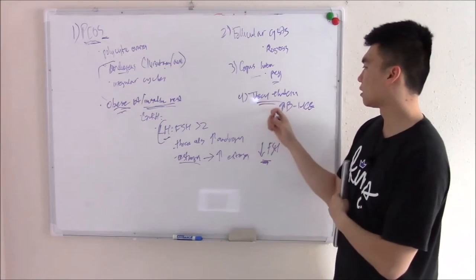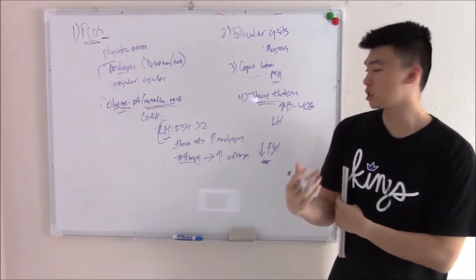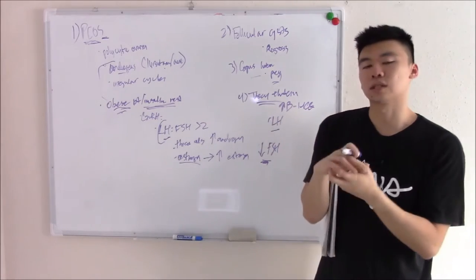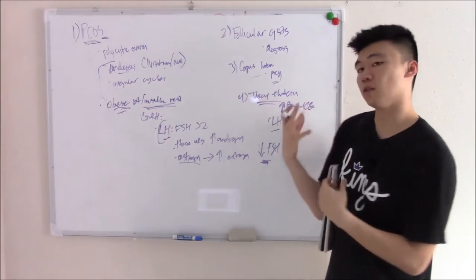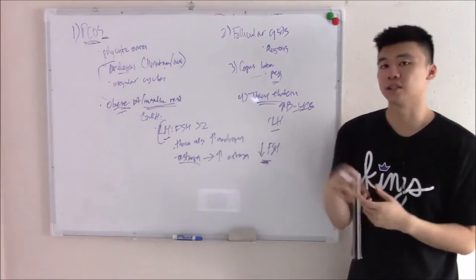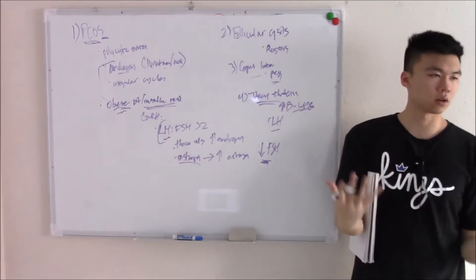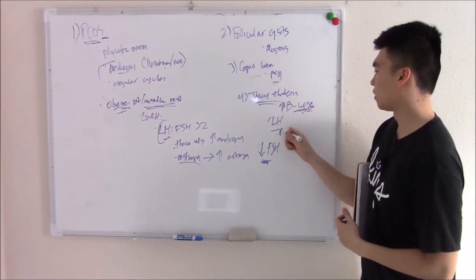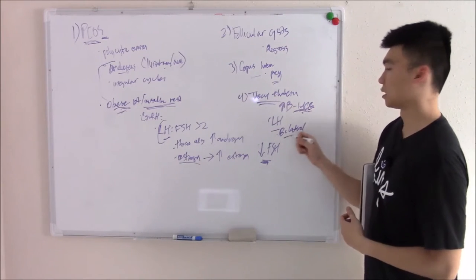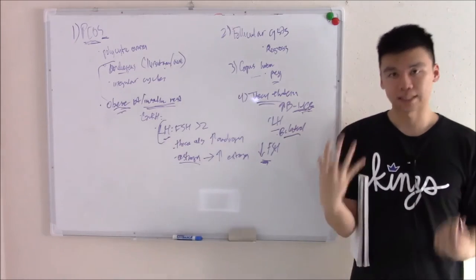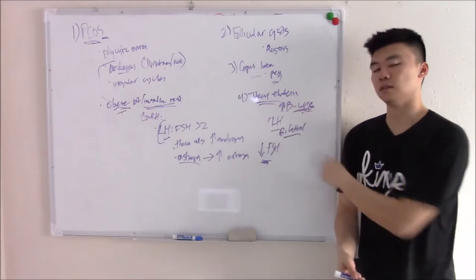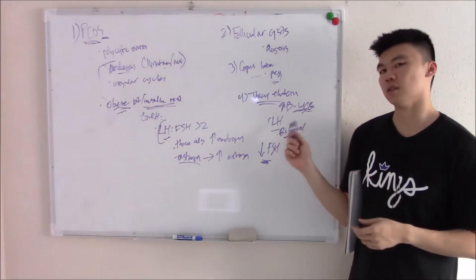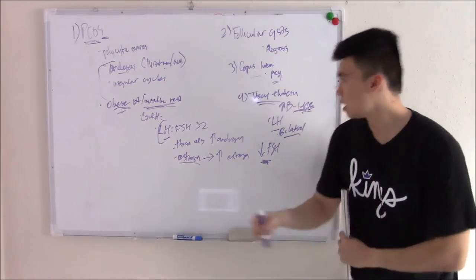Last one is theca lutein. This is seen whenever there's increased beta-HCG. Theca cells have receptors for LH and beta-HCG uses the same receptors, causing theca lutein cysts. Anytime you have increased beta-HCG - choriocarcinoma, moles, multiple gestation - patient comes in with bilateral cysts, theca lutein cysts.